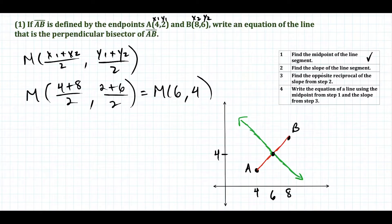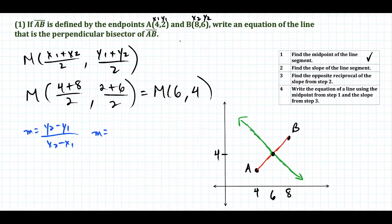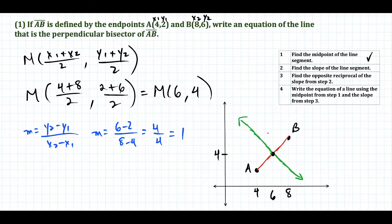The next step is to find the slope of line segment AB. The slope formula is m = (y₂ - y₁)/(x₂ - x₁). So our slope is (6-2)/(8-4) = 4/4 = 1. We can also confirm this by counting rise over run on the graph — we go up 1 over 1, so the slope equals 1.